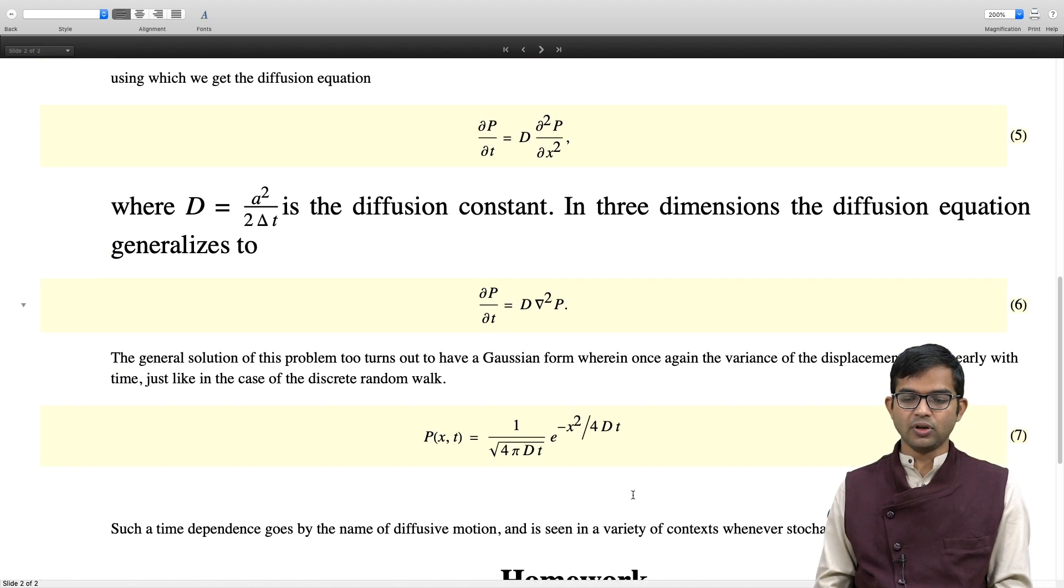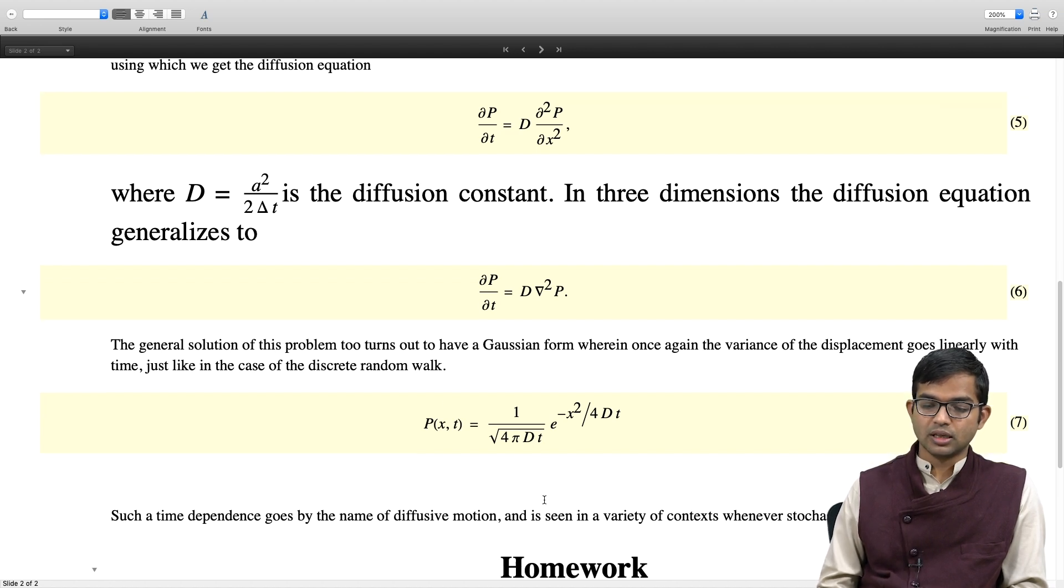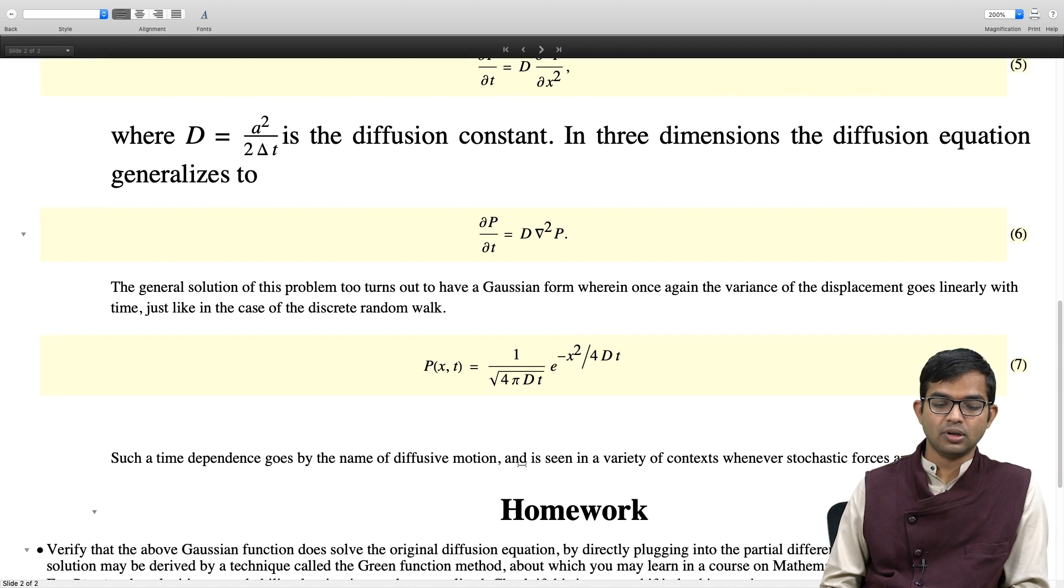So it is very closely related to the homework exercise that you should have hopefully done based on the earlier module, where I asked you to take the limit using Stirling's approximation and show that the binomial distribution goes to the Gaussian distribution. And indeed, you can show that the solution to the diffusion equation is this Gaussian equation, 1 over square root of 4 pi D t times e to the minus x squared by 4 D t. Whenever you have a dependence of this kind, the distribution of the position at time t going in this form, in a Gaussian way, and particularly the important point is that the denominator has D t. So the variance is directly proportional to time. That situation is called diffusive motion.